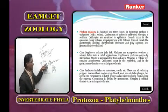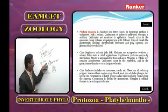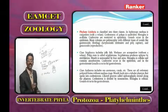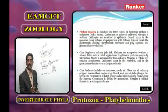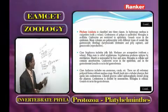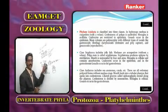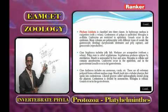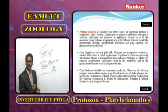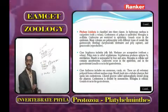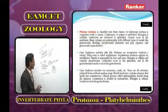In Scyphozoa, germ cells are derived from endodermis (endoderm). Example for Scyphozoa is Aurelia. The common name of Scyphozoa is jellyfishes.